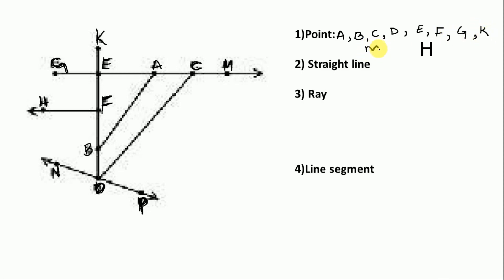Next we write the straight line. How do we identify a straight line? A straight line has two arrow marks. So here there are two arrow marks — the straight line is NP. This is the way we write a straight line. Next is ray — only one straight line is there.